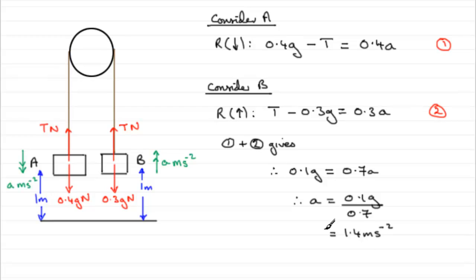Now, to get T, all we need to do is substitute A equals 1.4 then into either equation 1 or 2. I'm going to go into equation 2 and rearrange it. T will equal 0.3A plus 0.3G. So, if we just say sub A equals 1.4 meters per second per second into 2, and rearrange, then what we've got is that T equals 0.3 multiplied by A, 1.4 plus 0.3G, plus 0.3G. And if you work that out, you end up with exactly 3.36 Newtons.